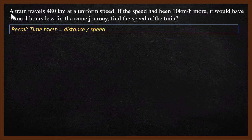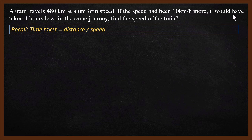First question: A train travels 480 km at a uniform speed. If the speed had been 10 km per hour more, it would have taken 4 hours less for the same journey. Find the speed of the train.